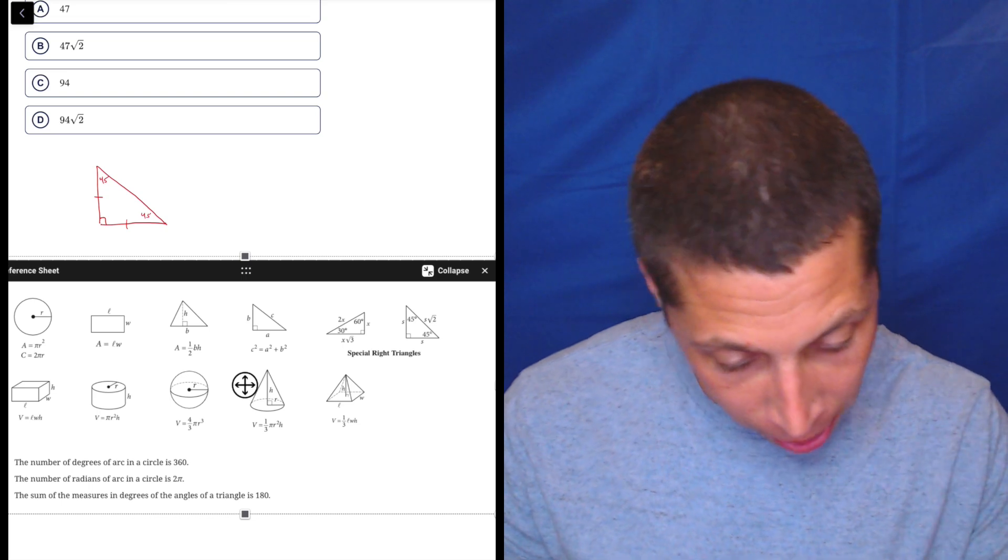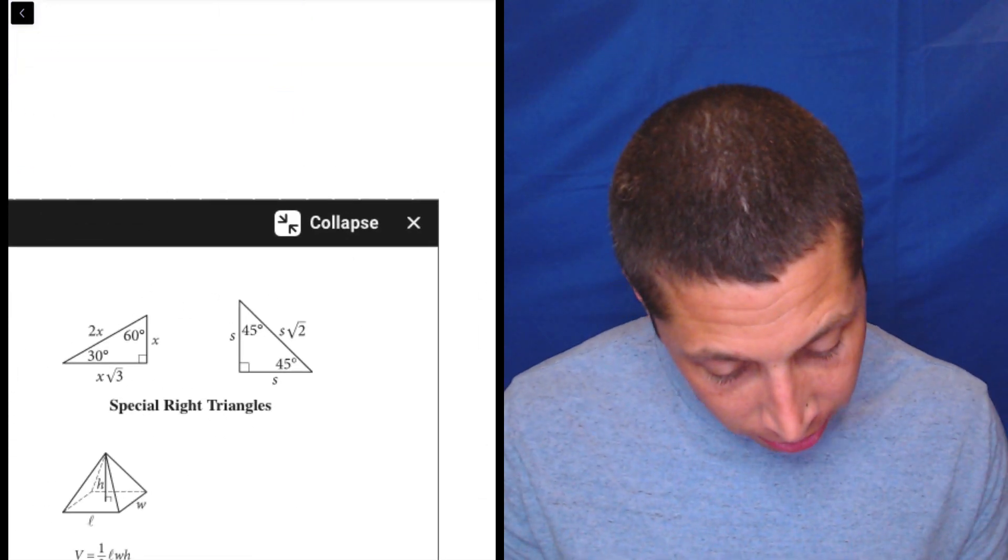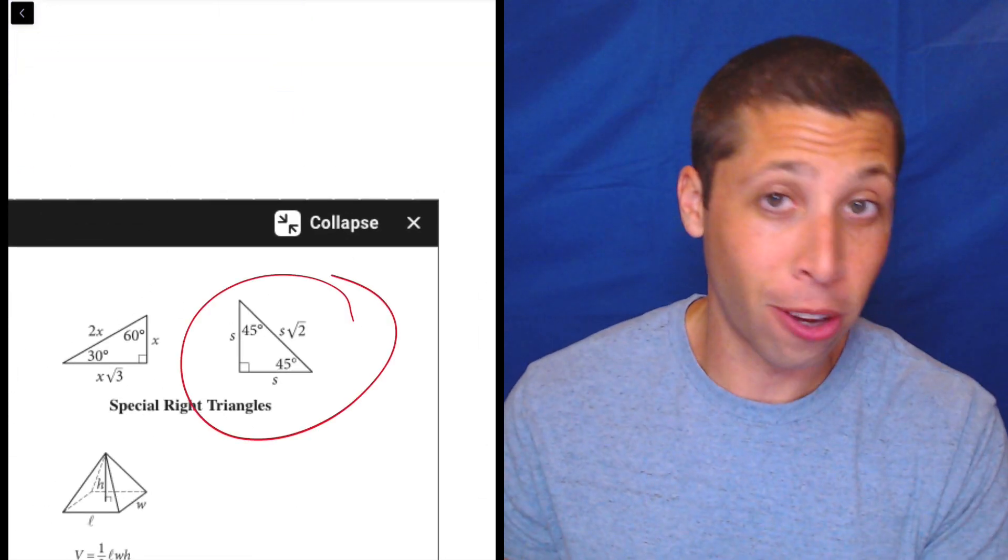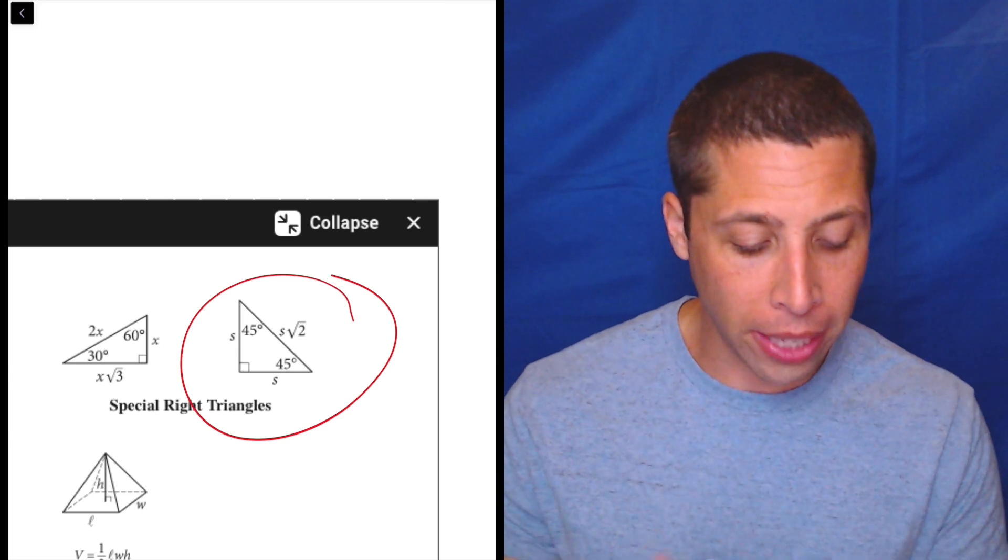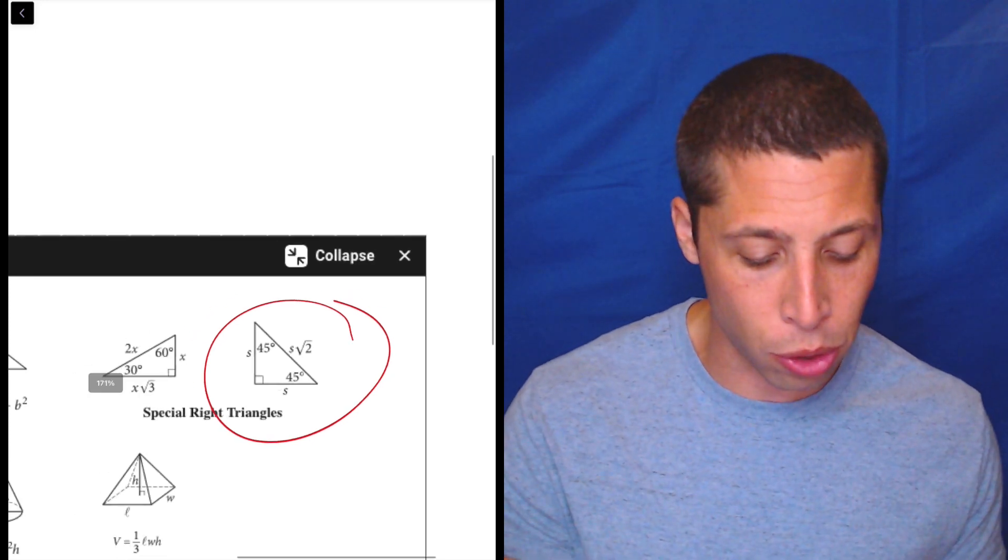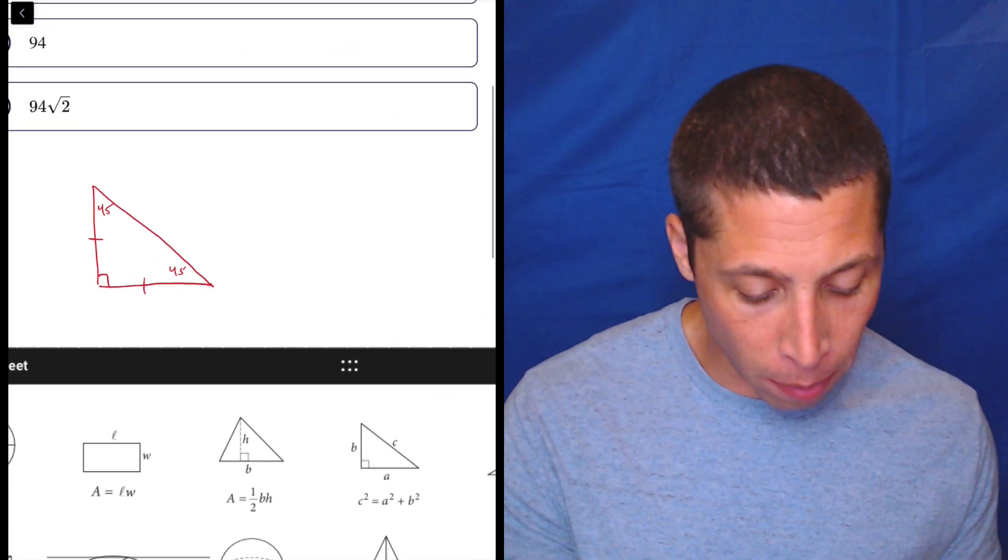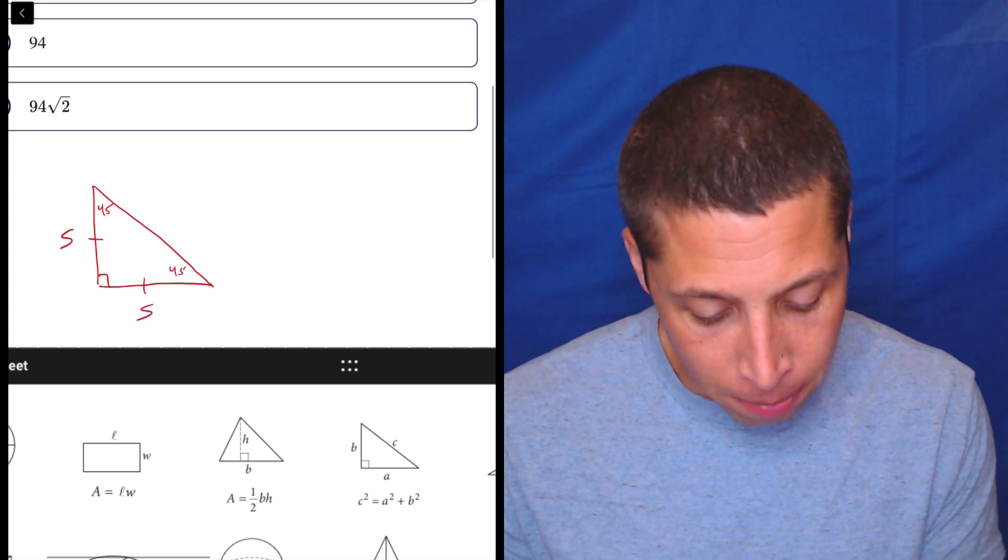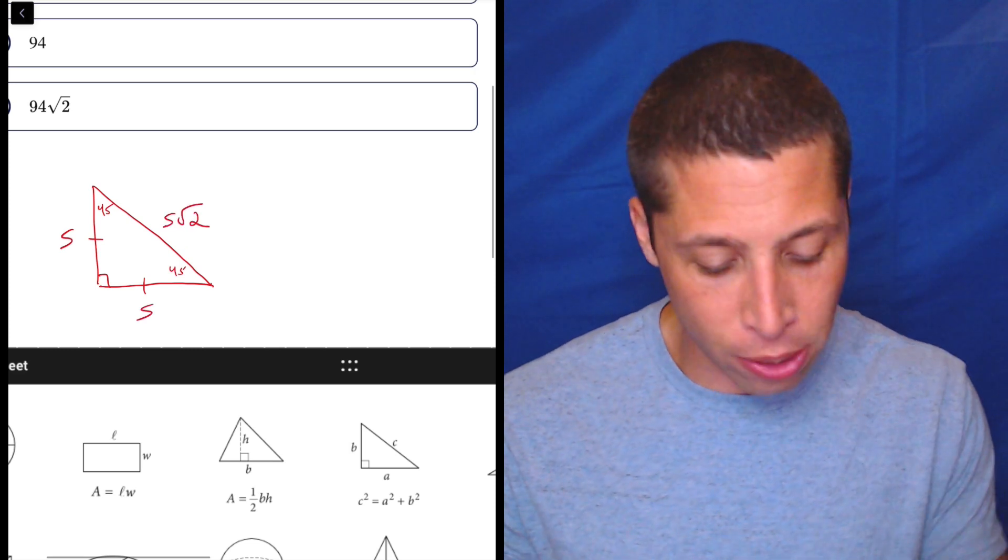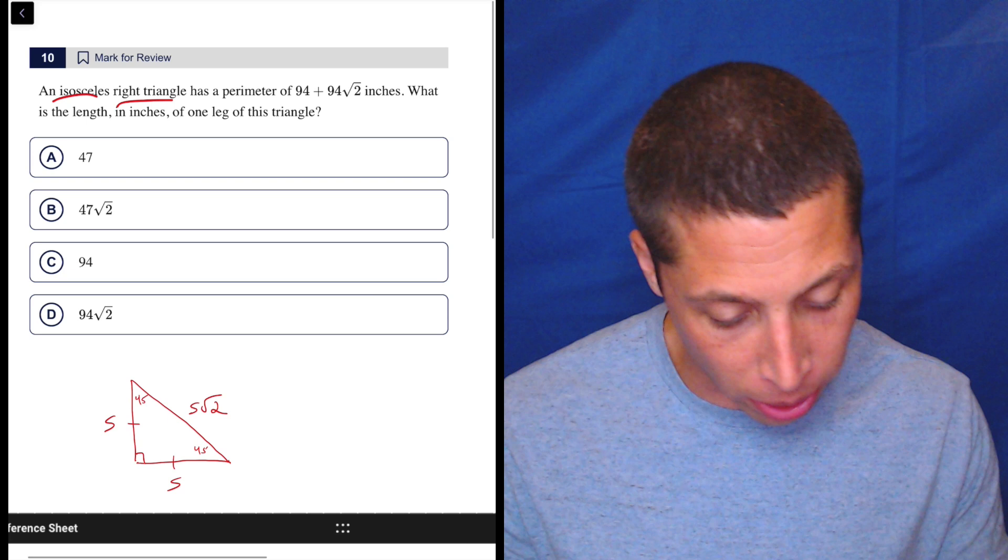because I really care about this part right here, because that is also an isosceles right triangle. And you can see there's a relationship between the S's and the S root 2's. So that's kind of how I'm going to think of this, is I've got my S, my S, my S root 2. I hate that they use S, though. It kind of bothers me because my S's look like 5's, but it's okay.